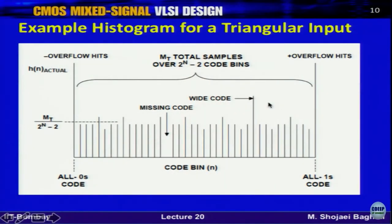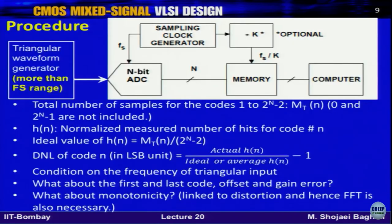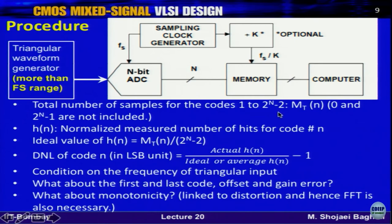It is also possible to use a sine wave instead of a triangular wave. However, a sine wave does not give equal probability across all codes — codes near the peak and trough get many more hits because the slope is near zero there, while mid-range codes get fewer hits. So you must de-embed the known sine wave histogram distribution to extract the non-linearity.